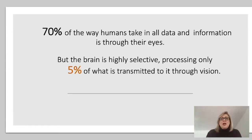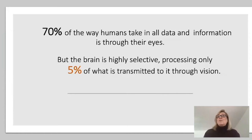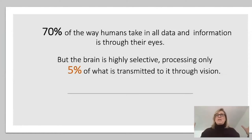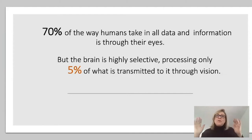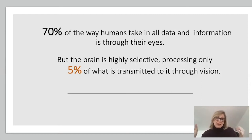What have we learned from this research? We know that 70% of the way humans take in data and information is through their eyes. We all are visual learners. But our brains are highly selective — we only process about 5% of what we see, because if we took in everything in our line of vision our brains would be on overload. So if you're throwing everything at somebody, you're overloading them and not leveraging that 5%. You need to use techniques to direct attention to what matters.